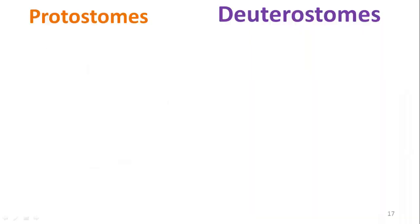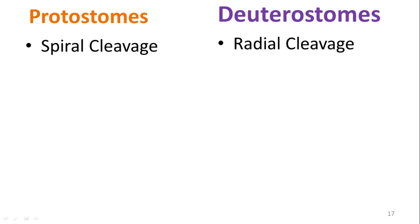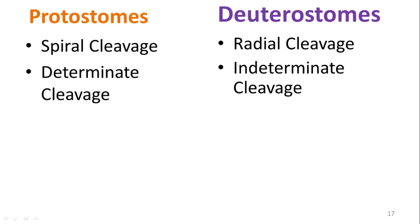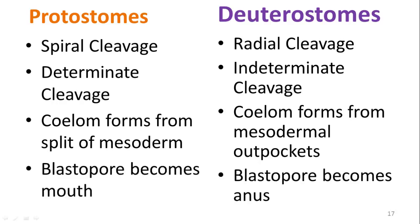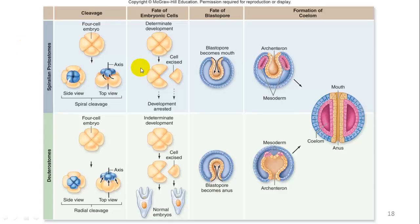There are developmental differences between protostomes and deuterostomes. Protostomes have spiral cleavage; deuterostomes have radial cleavage. Spiral cleavage means one layer of cells sits atop another layer slightly rotated — the separations between cells do not line up on top of each other. In radial cleavage, the separations do lie directly on top of each other. Protostomes also have determinate cleavage; deuterostomes have indeterminate cleavage.